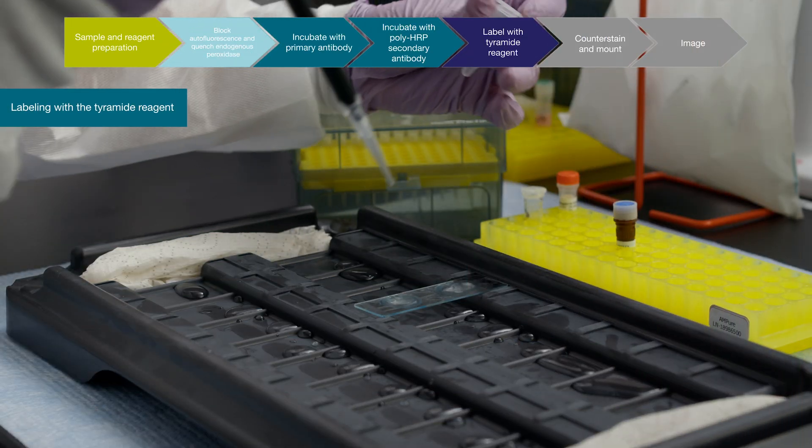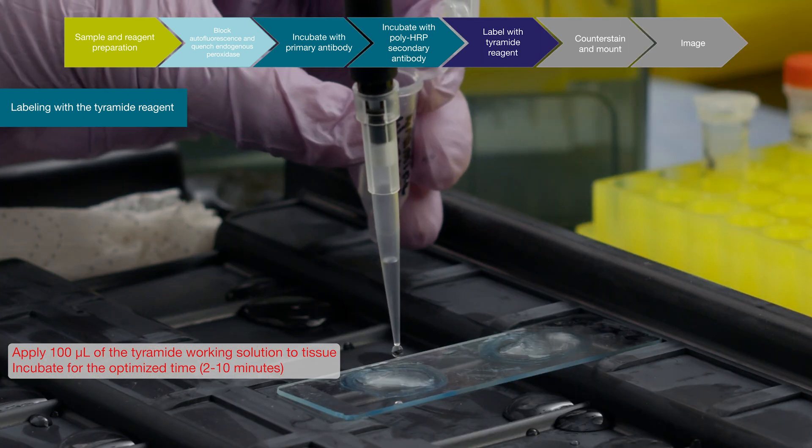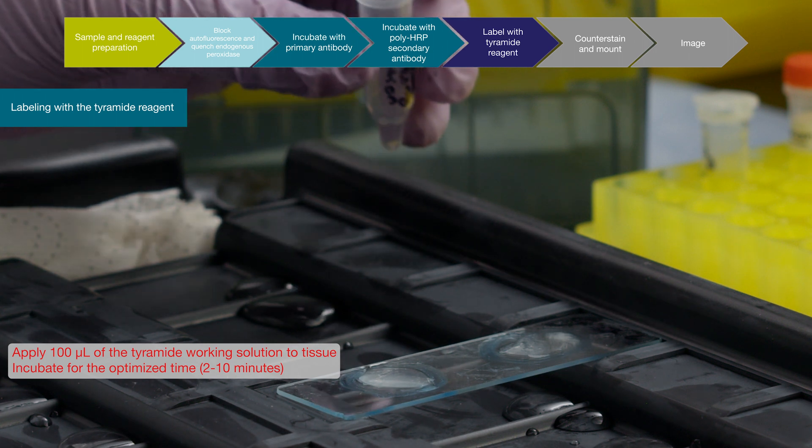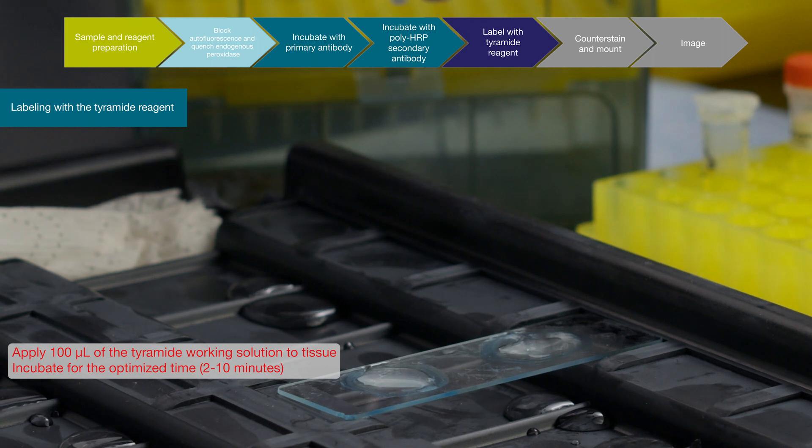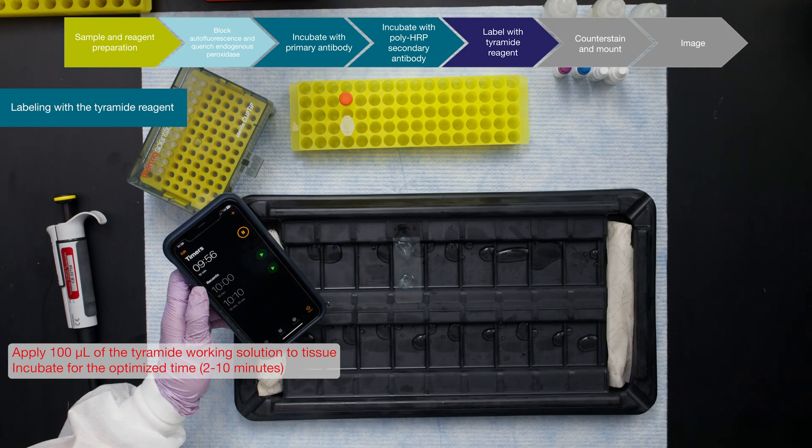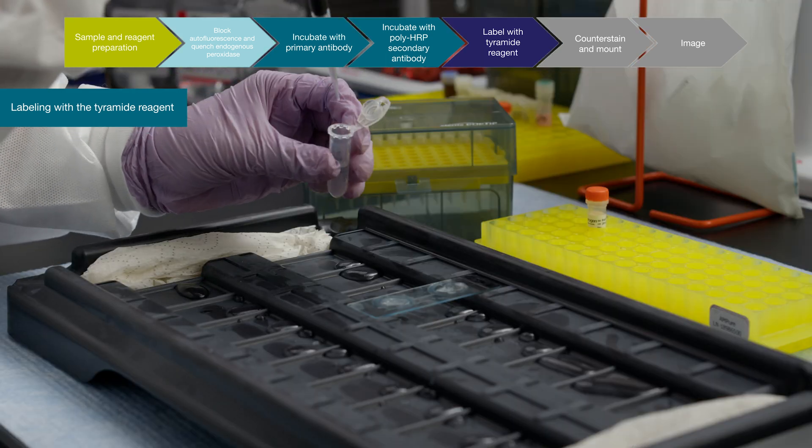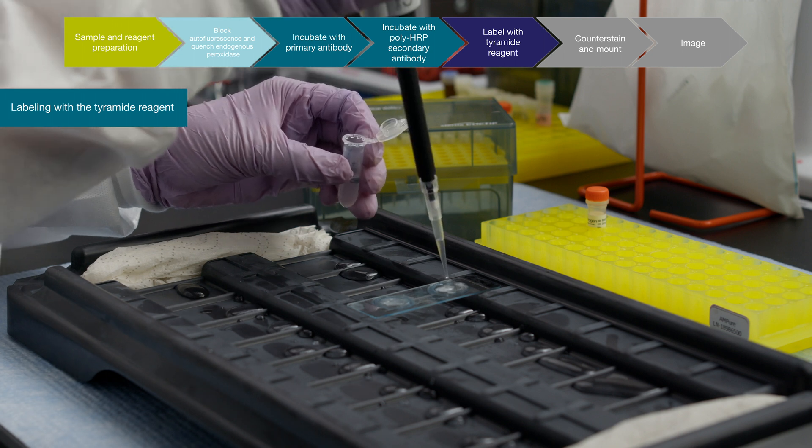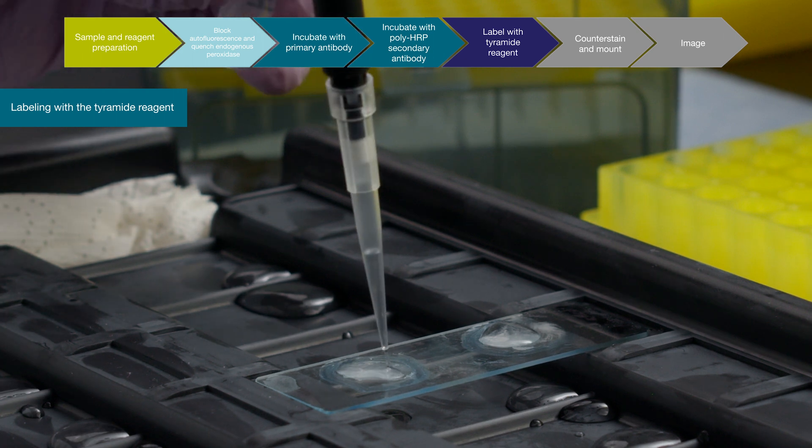Label with Tyramide reagent. If multiplexing, the heat-induced epitope retrieval step can be repeated to stop the reaction before proceeding with the next primary antibody incubation. If using only one primary antibody, use the STOP reagent. Apply the working STOP solution to stop the reaction. Having too much antibody, or not stopping the depositing of the Tyramide dye, will result in overstaining the sample.